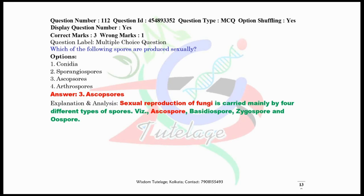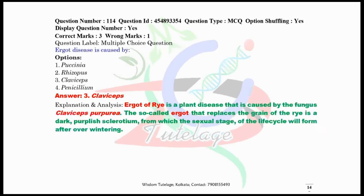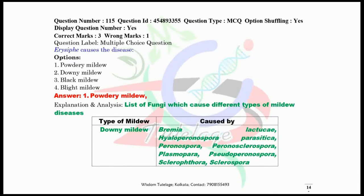Question number 113: Which of the following organisms lacks a definite cell wall? The correct answer is mycoplasma. Mycoplasma is a genus of bacteria that lacks a cell wall. Question number 114: Ergot disease is caused by Claviceps purpurea.